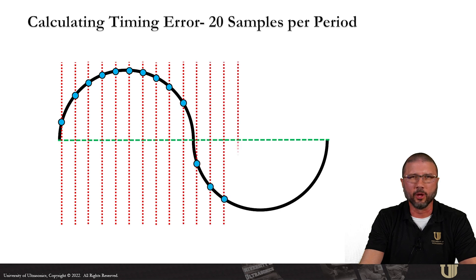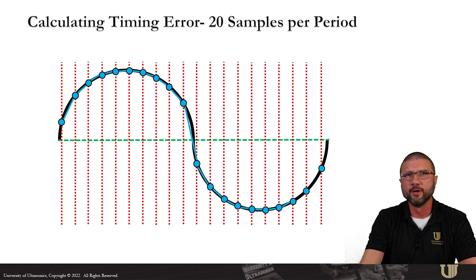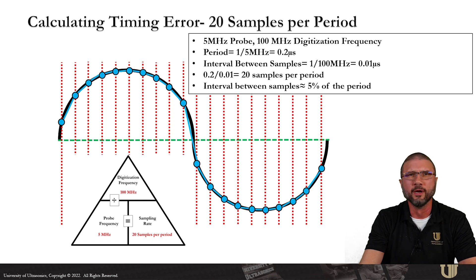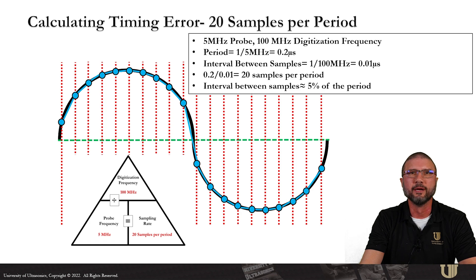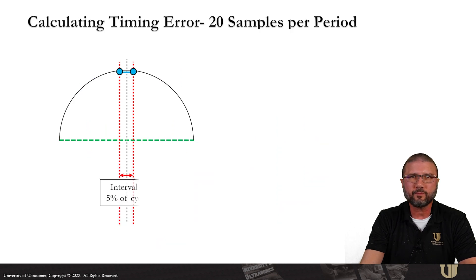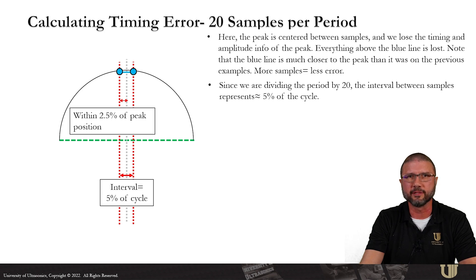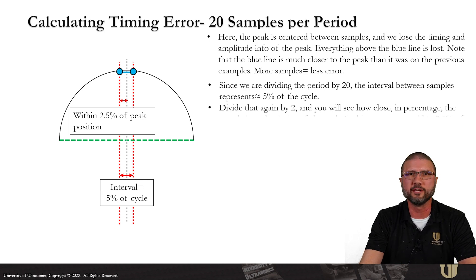For the next scenario, we're going to blow it out of the water — a 5 megahertz probe with a 100 megahertz digitizing frequency, giving us 20 samples per period. By the way, 100 megahertz is the default digitization frequency in many of today's phased array instruments, before any compression, sub-sampling, or points quantity adjustments. The more samples you collect, the closer you get to the peak, and the better your timing and amplitude fidelities are going to be. Here we show the peak centered between samples and we lose anything above that blue line, but notice the blue line is much closer to the peak than previous examples.